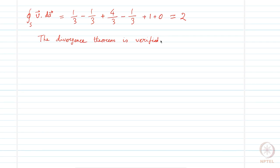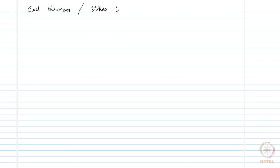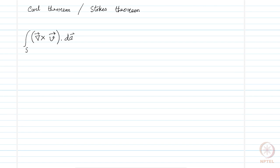Let us consider another theorem about curl that is known as Stokes' theorem. The statement of this theorem goes: if we have a vector v, if we take the curl of this vector and make a surface integral of this curl, then on any surface this would be equal to a closed line integral of this vector dot a line element.